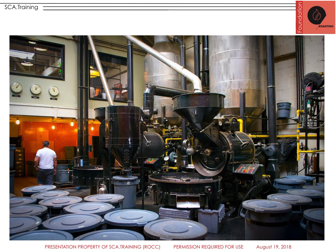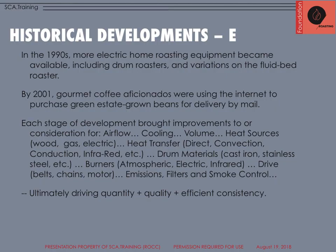We're moving to higher volume industrial applications, highly mechanized and computer controlled. In the 1990s, more electric home roasting equipment became available, including drum roasters and variations on the fluid bed roaster. By 2001, gourmet coffee aficionados were using the internet to purchase green coffee. We're focusing now on subtle developments considering airflow and cooling volume. We've transitioned from heat sources like wood to gas to electric. Heat transfer can occur with direct convection, conduction, or infrared. Many different drum materials have been used or experimented with — cast iron, stainless steel, burners, atmospheric burners, electrical burners, drive belts and chains, motors, emissions filters, and smoke control. Ultimately, all of these things help drive quantity, quality, and efficiency.